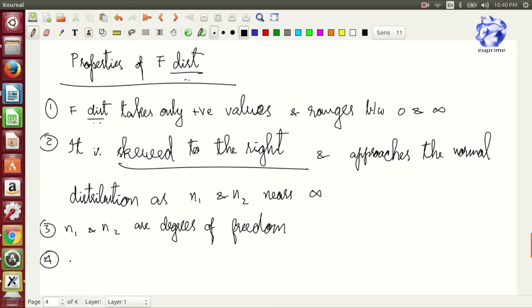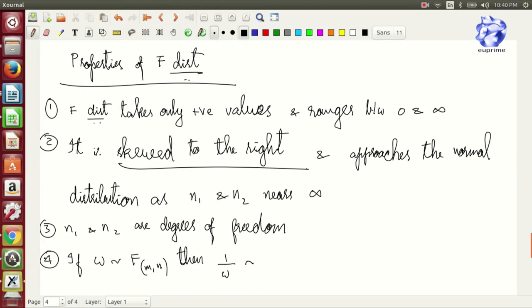If W is similar to F(n1, n2), then 1 by W is similar to F(n2, n1). So finally we get F as the following equation. Thank you.